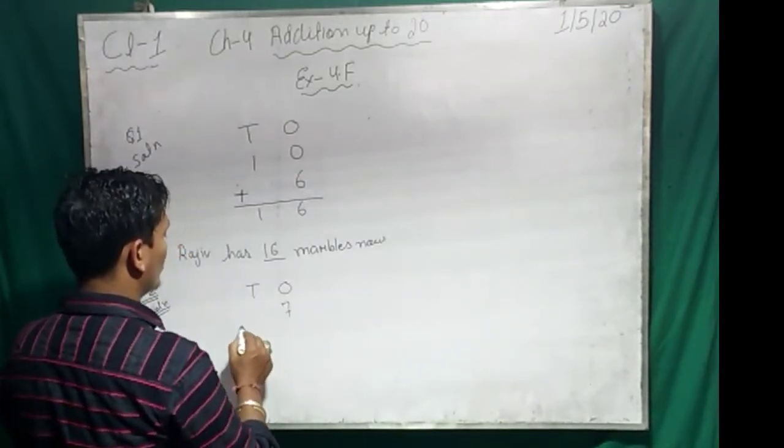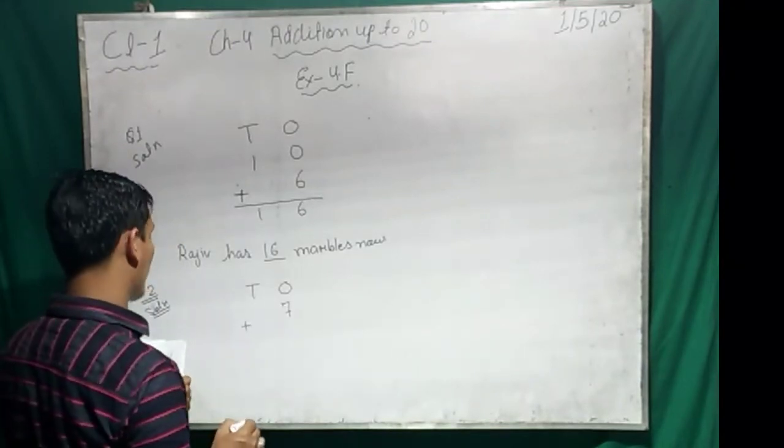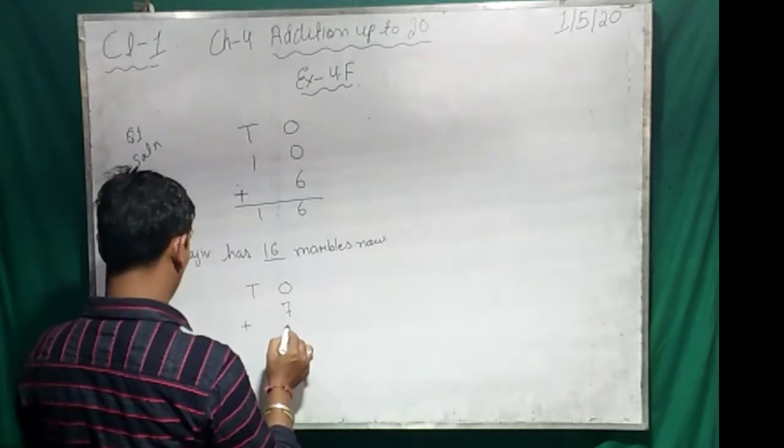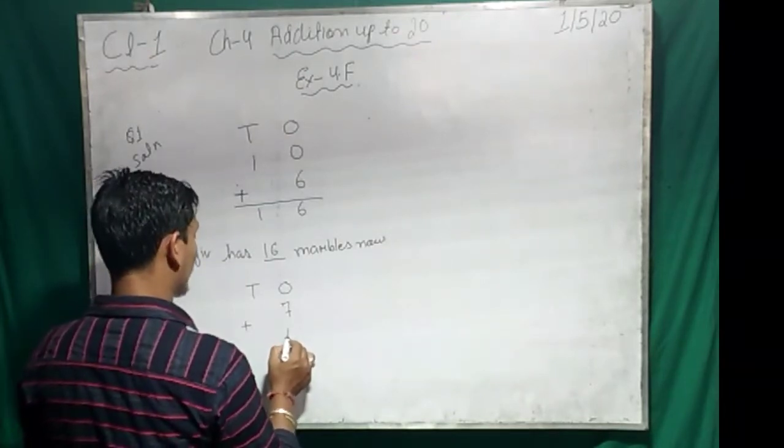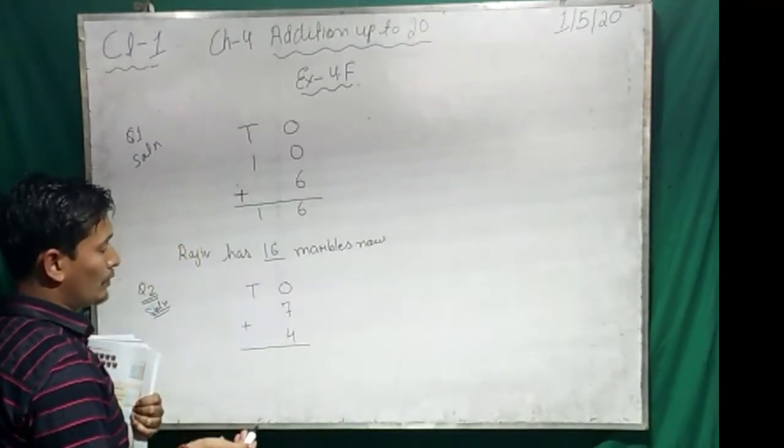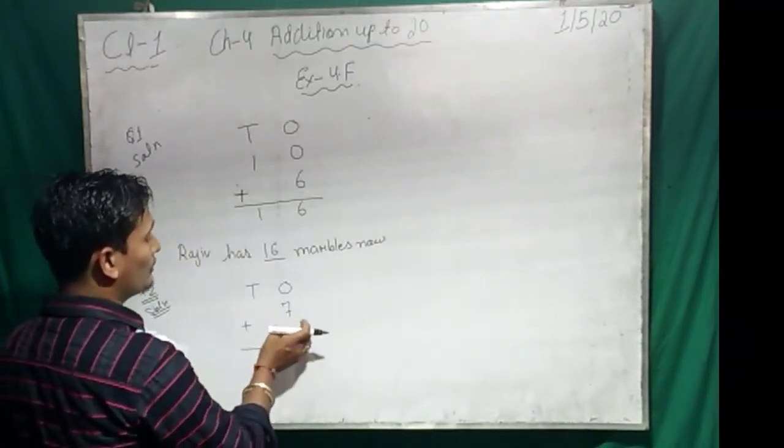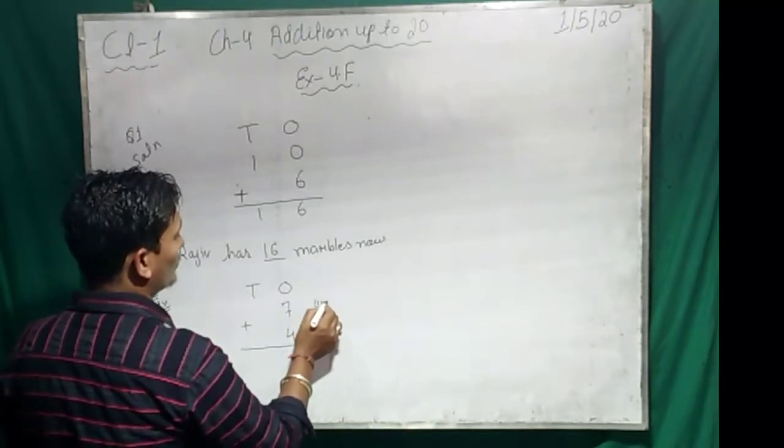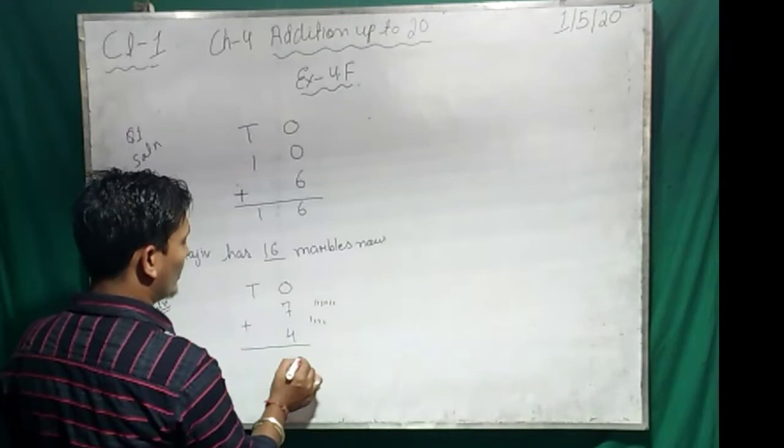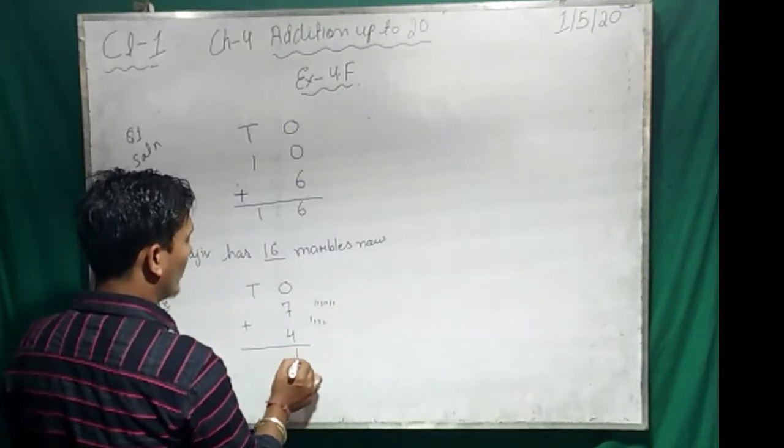Then, how many toys Anil has? Seven, then plus. Together now, we have to do plus. And how many toy buses with Sunil? Four. Now do it. How do you know? Count it and do it from this side. One, two, three, four, five, six, seven. One, two, three, four. Now count it all together. What you will get? Eleven.